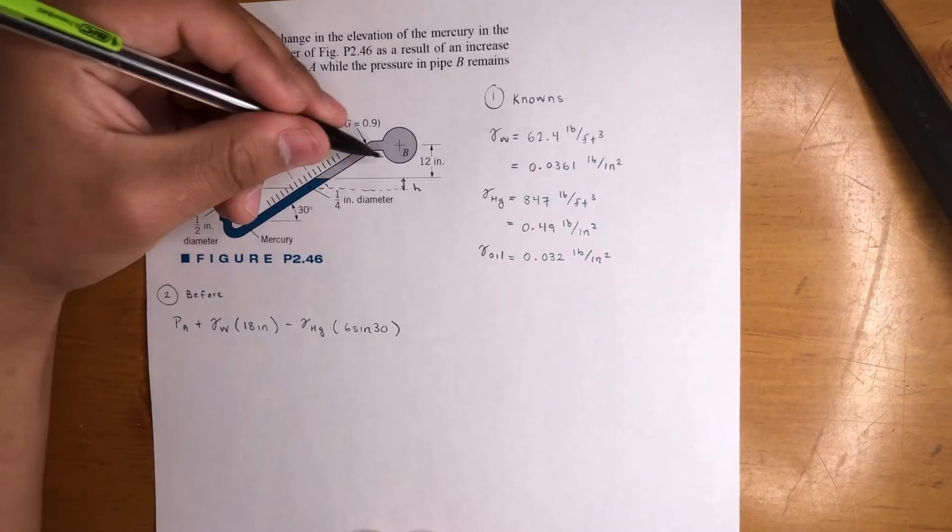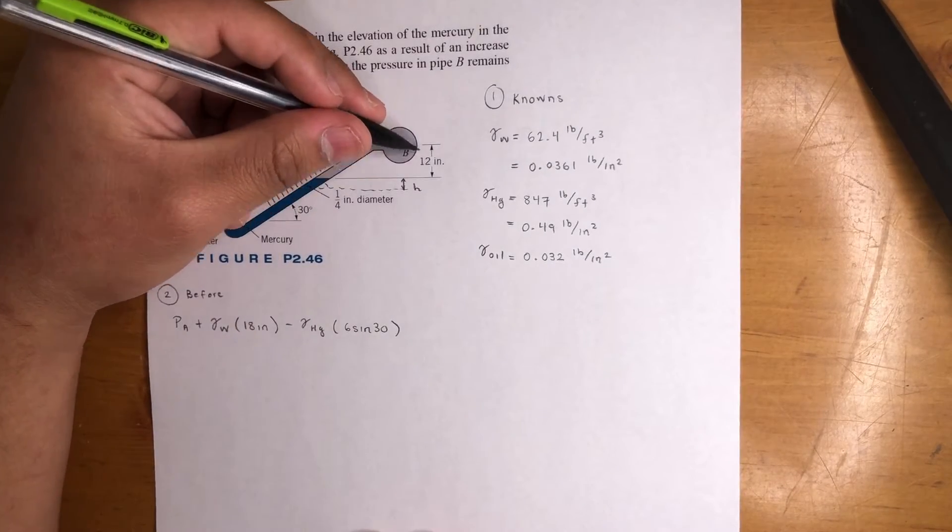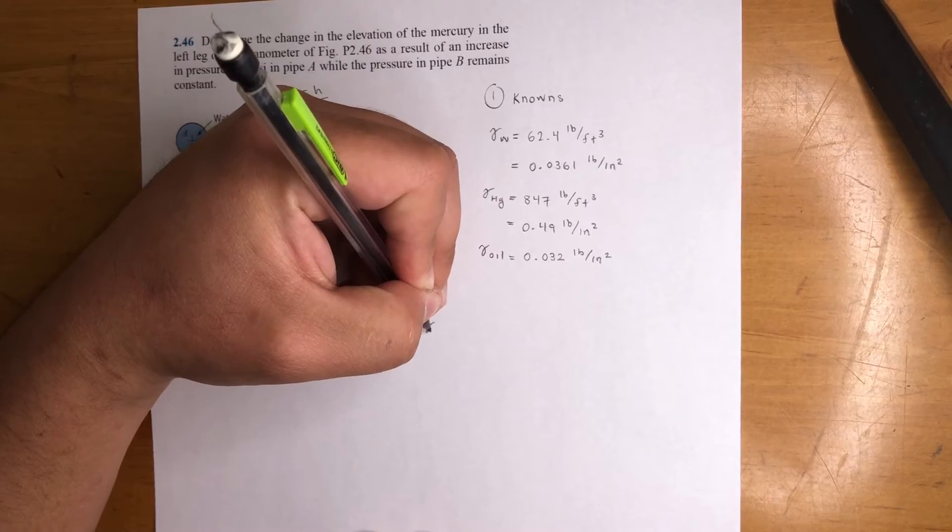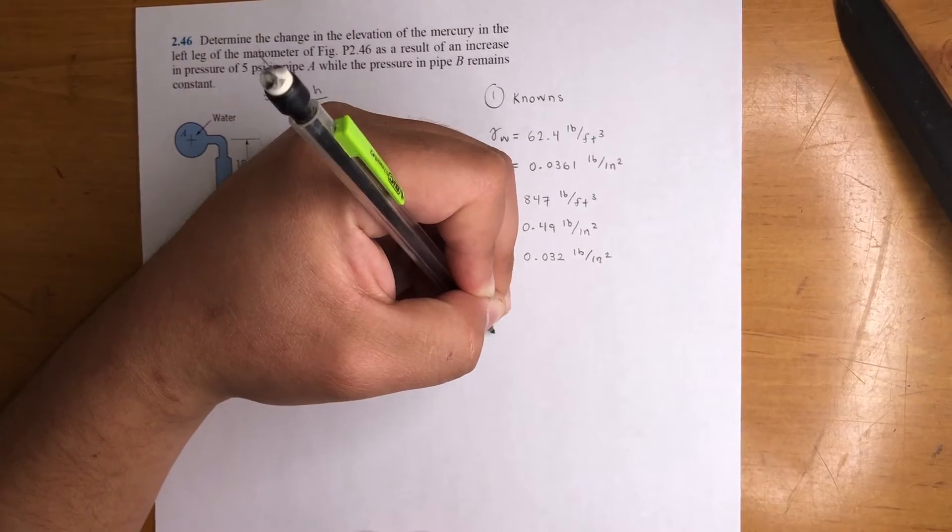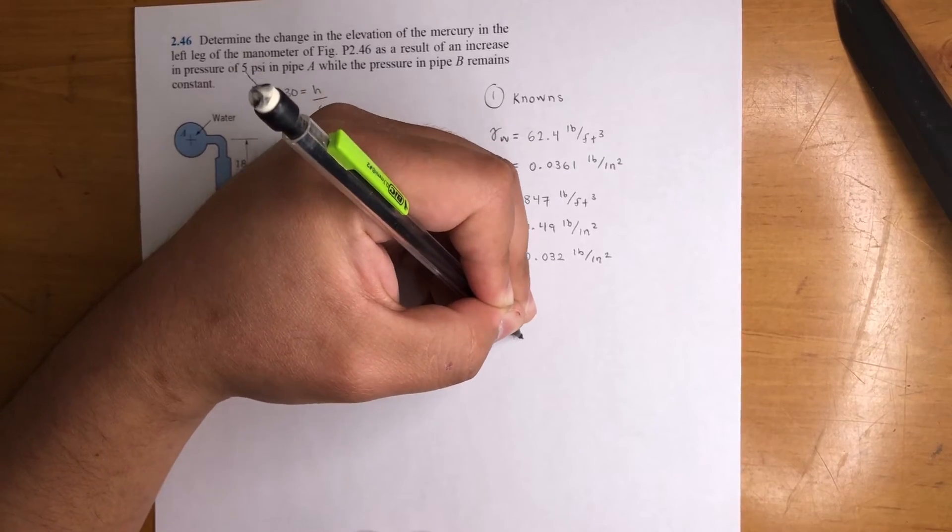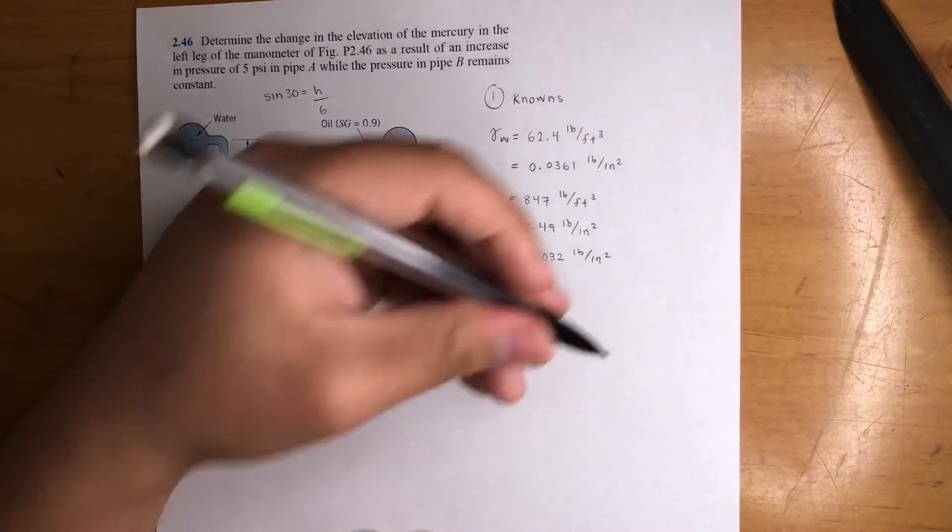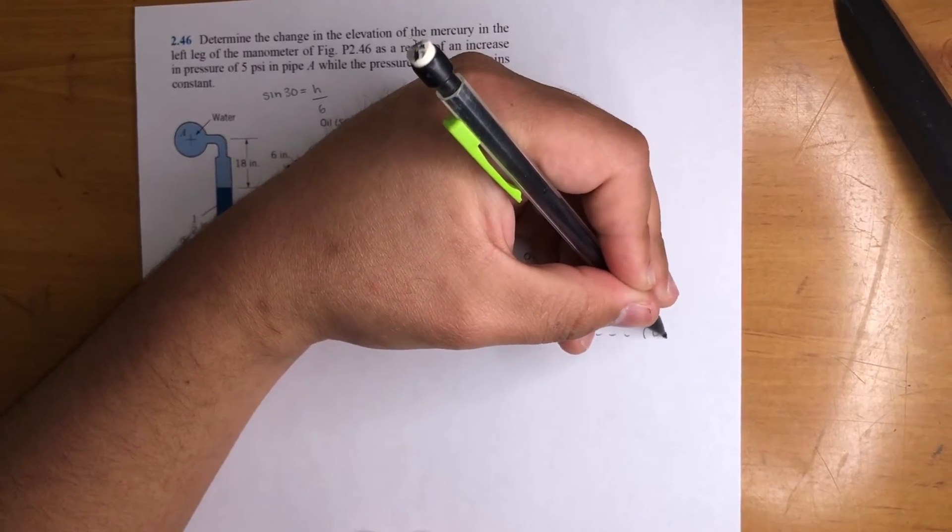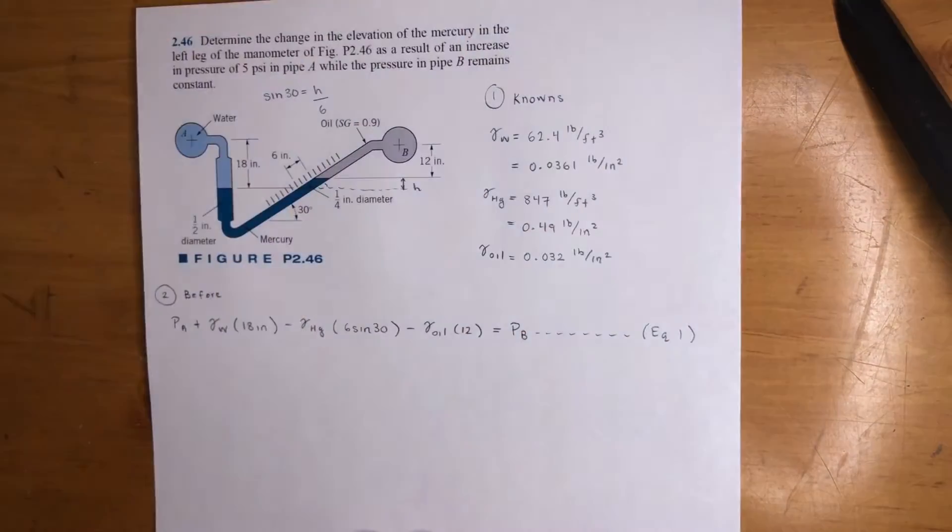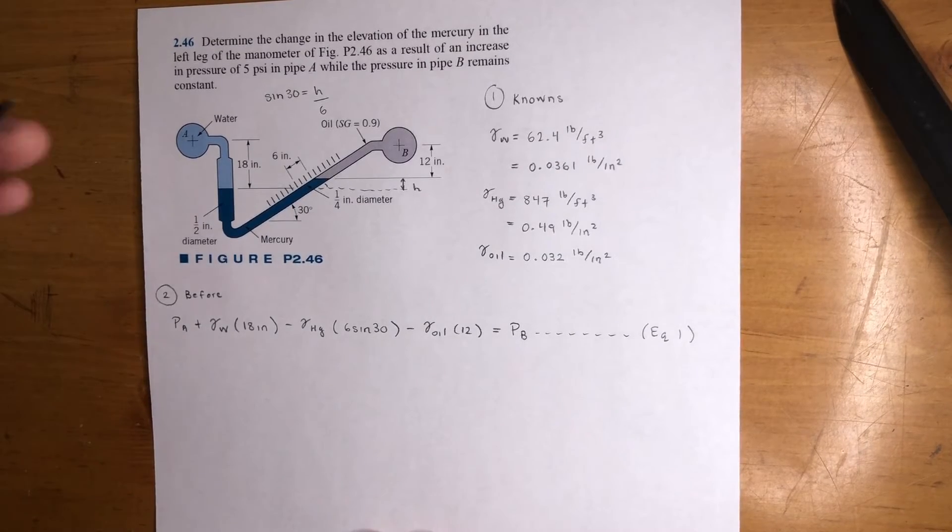Now, from this point to this point, we're going up 12 inches. It's oil. Going up negative. It's oil times 12 inches. And that is PB. That's equation 1 right here. Hold on, I'll move my hand so you can see. That's what's going on right there.